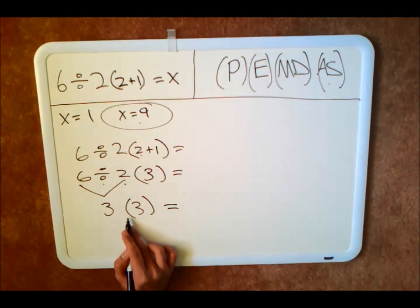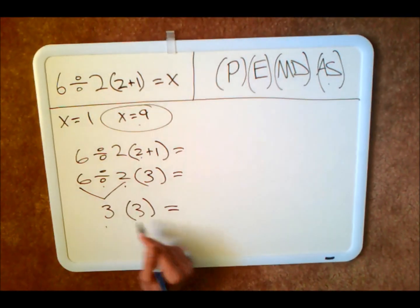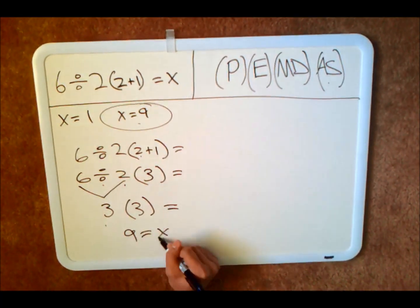Now, whenever you have a number next to each other with parenthesis, it's a multiplication. So when you multiply these together, you get 9. So x is equal to 9.